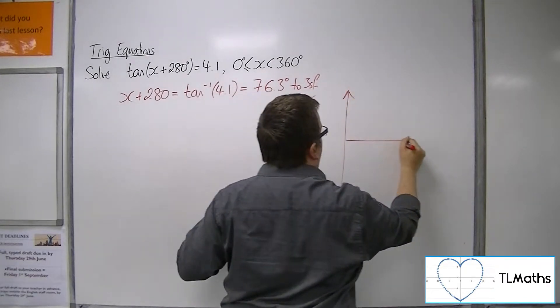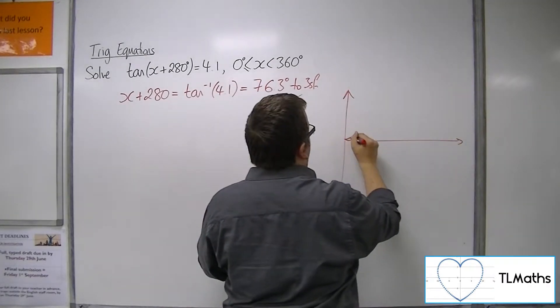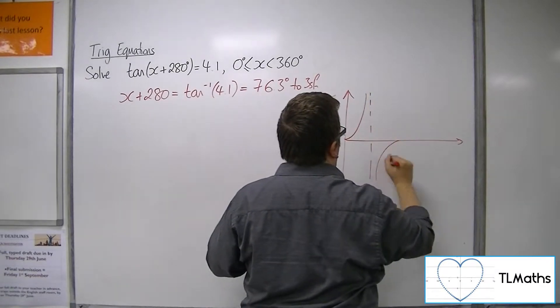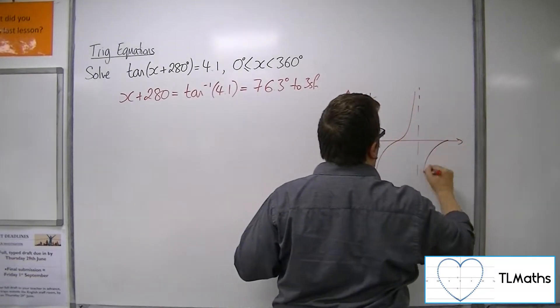So, then sketch tan between 0 and 360. OK, just needs to be a basic sketch.